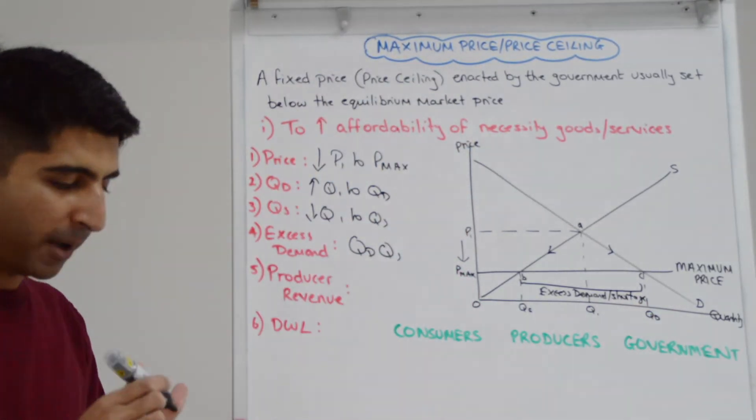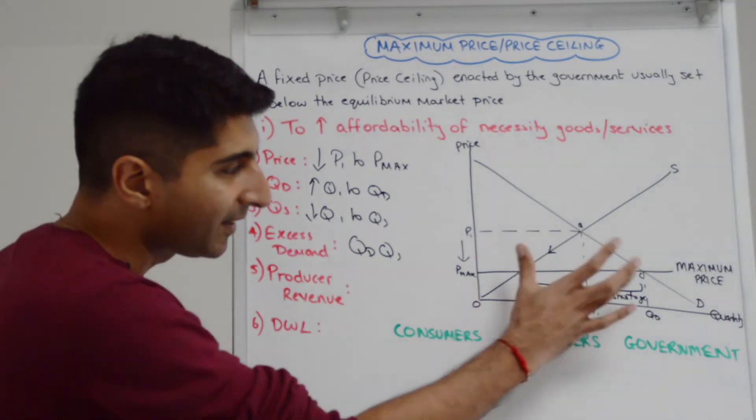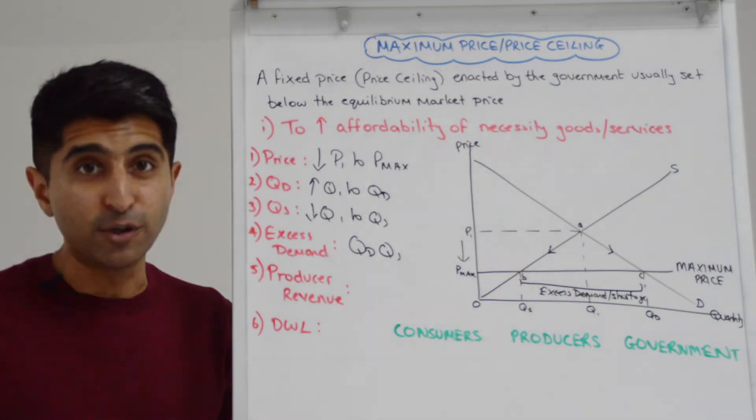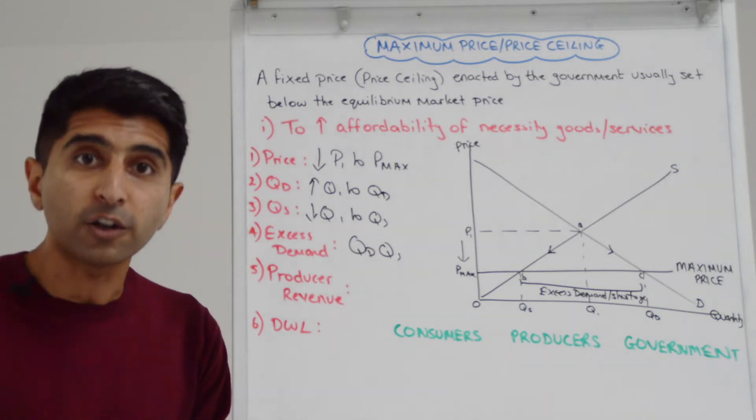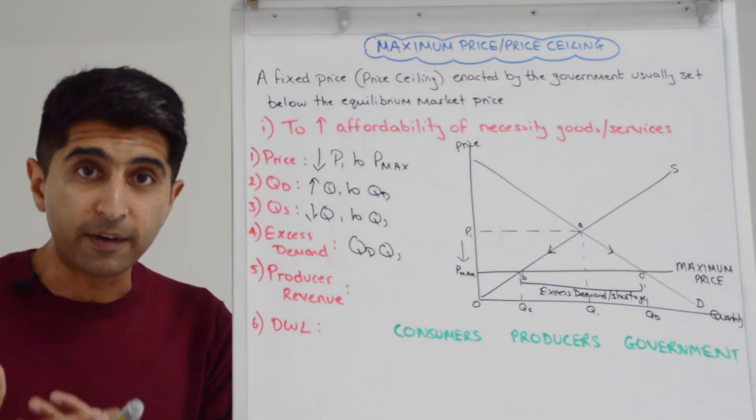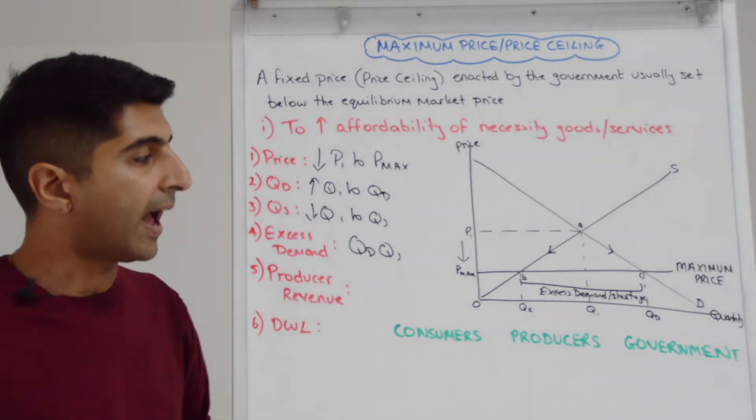So the idea is, by imposing a maximum price, make this good or service more affordable. But by contracting supply and encouraging so much more demand, actually, producers can't satisfy the demand. There are so many consumers out there who still can't access the market, not because they can't afford it now, but because simply there isn't the supply available. And that's a huge concern for consumers. We'll come to that in a second.